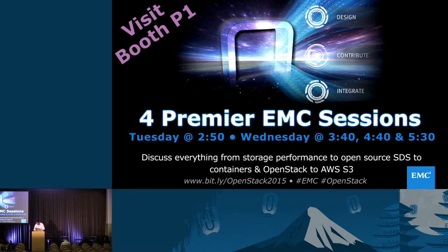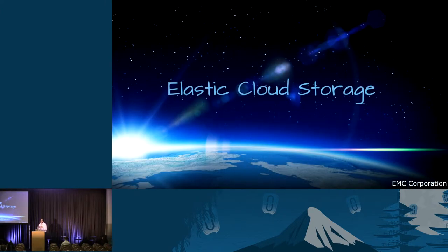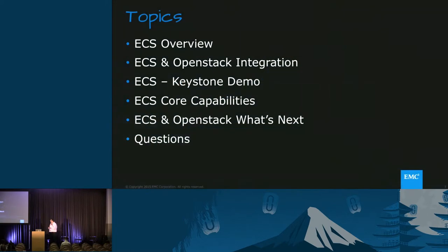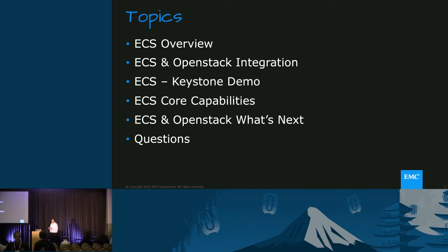Hi everyone. So we're going to get started. Today we're going to talk about how you can really get Elastic Cloud Storage running as a true cloud storage in your environment that supports S3 and Swift services. We're going to give an overview of ECS, talk about our OpenStack integration, give a demo with Keystone, talk about some core capabilities, and then what's next.